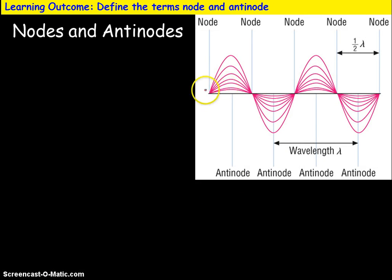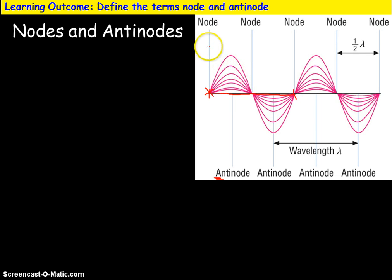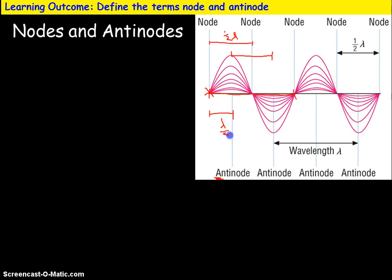Nodes and anti-nodes: a node corresponds to a point of no displacement — the zero points on the wave. An anti-node corresponds to a point of maximum displacement, i.e., the amplitude. One full wavelength is the distance between two full cycles, meaning the distance between two adjacent nodes corresponds to half a wavelength. The distance between two anti-nodes also corresponds to half a wavelength, as shown in the diagram. Therefore, the distance between a node and an anti-node corresponds to λ/4, a quarter of a wavelength.